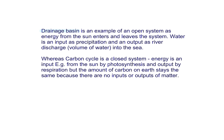The carbon cycle is a closed system. Energy is an input — coming from the sun via photosynthesis — and the output comes in the form of respiration, but the amount of carbon on Earth stays the same because there are no inputs or outputs of matter.